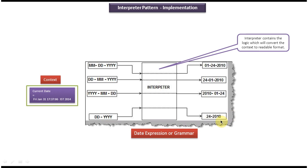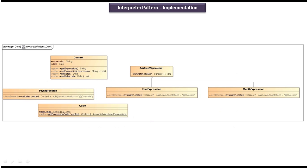Now we will see the class diagram of the scenario. This is the class diagram of the scenario which we have just discussed. Here you can see the context — context is the data which we want to interpret, and in this case the data is a date. And in which format we want to interpret the date, that is the expression. And here you can see the abstract expression, which is the interface, and it has an evaluate method which is an abstract method. That evaluate method acts on the context object. And this abstract expression is implemented by three concrete classes: the first one is day expression, the second one is year expression, and the third one is month expression.